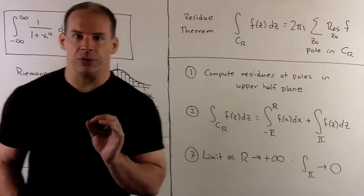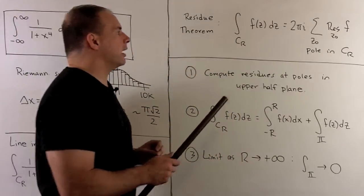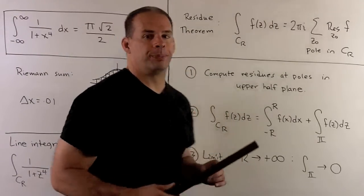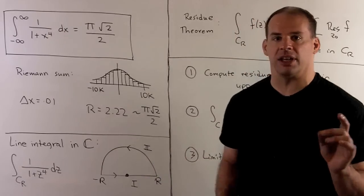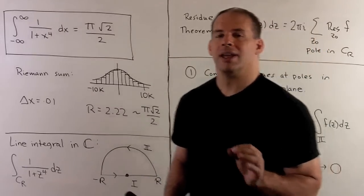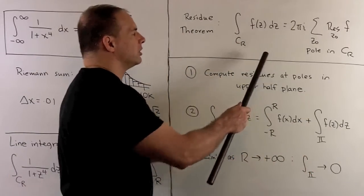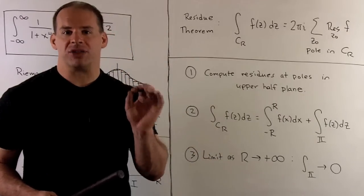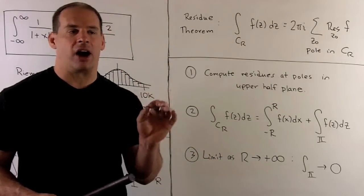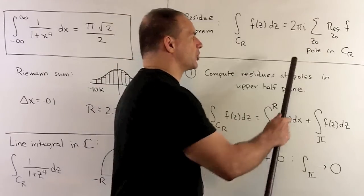Now, what the residue theorem says: if our function is holomorphic in this region, except at isolated singularities, then we can compute this line integral just as 2 pi i times the sum of the residues at each singularity. And in this case, we're just going to have poles.